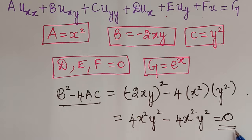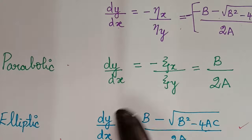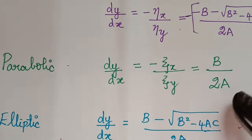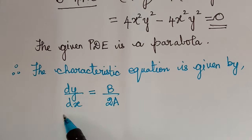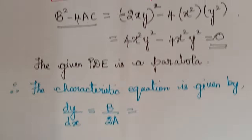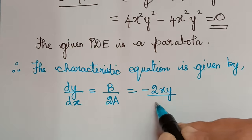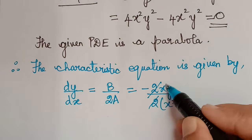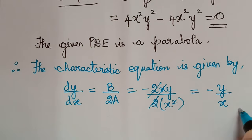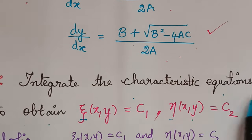After classifying, we write the characteristic equations. For a parabolic PDE, the characteristic equation is dy/dx = b/(2a). Substituting: dy/dx = −2xy / (2x²) = −y/x. So dy/dx = −y/x.